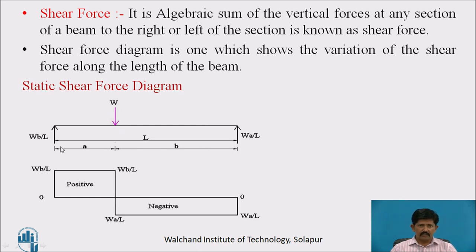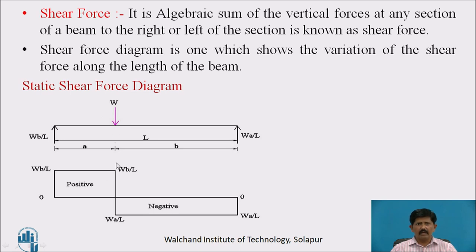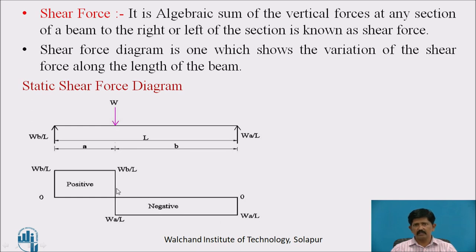I have taken the reactions here as WB/L and WA/L. When I consider the shear force on the left of section W, I get only one force — the reaction — which is upward, meaning it is positive in nature. So I have drawn WB/L and it is constant up to this point load. When I consider the shear force on the right side of the section, only one force is there — the reaction WA/L — which is upward, but our sign convention says right of the section downward is positive, so upward means I show it negative, drawing it in the lower side. WA/L is constant up to this point load. Joining these gives the shear force diagram, which is for a static loading condition.